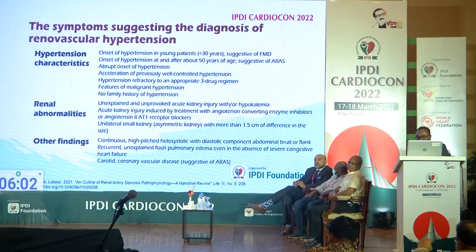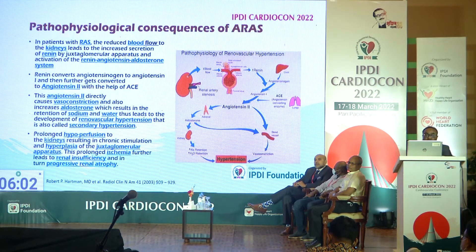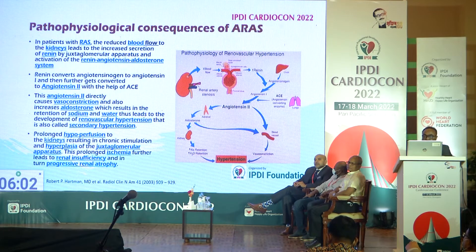Symptoms suggesting renal artery stenosis include hypertensive characteristics, renal abnormalities such as renal dysfunction, and other clinical findings. Due to low flow to the juxtaglomerular apparatus, renal artery stenosis leads to hypertension, and by continuous ischemia it causes ischemic nephropathy.